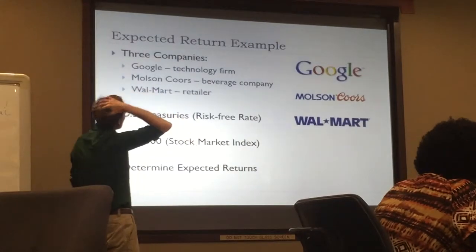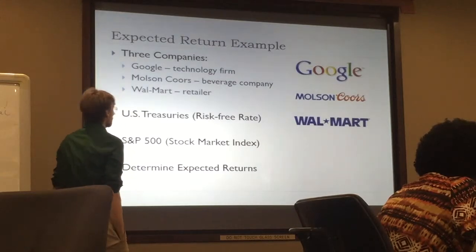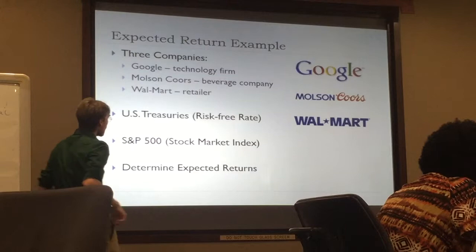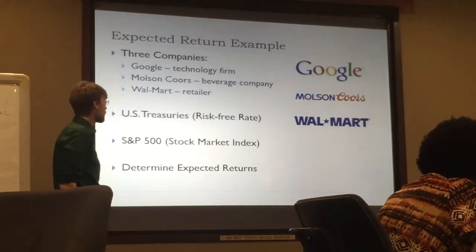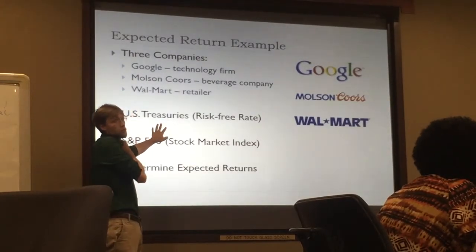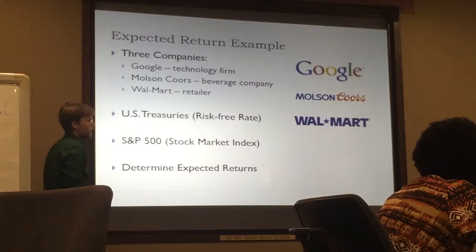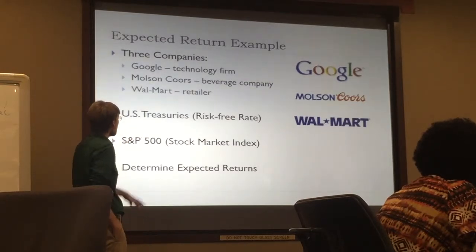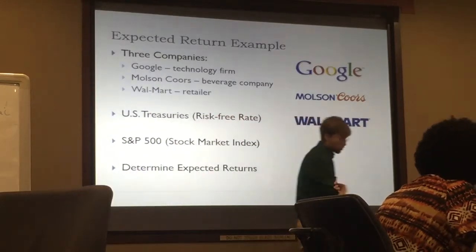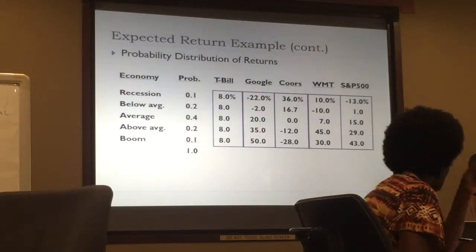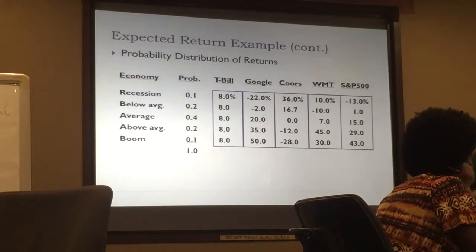Let's do an example with some fake data. We're looking at Google, Coors, and Walmart, along with the U.S. Treasury bill as our risk-free proxy and the S&P 500 as our stock market index. Treasury bills are short-term government borrowing — historically not completely risk-free but the closest thing we have. To calculate expected returns, we need a probability distribution. In this type of work, you'll always be given the probability distribution.